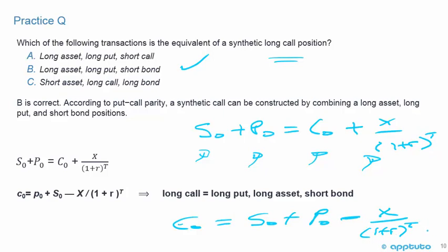We can call that short the bond. Looking at option A: long asset — correct; long put — correct; short call — no, that's wrong, we're talking about a synthetic call, not short the call. Option B: long asset — correct; long put — correct; short bond — yes. B is correct. Option C: short asset — no, we're long the asset. B is clearly right.